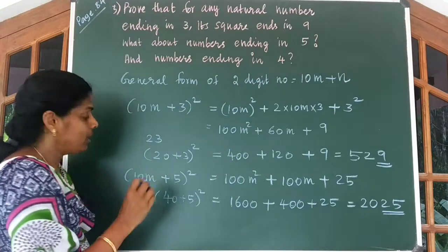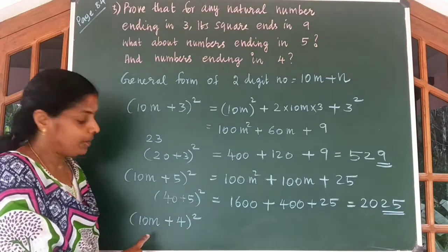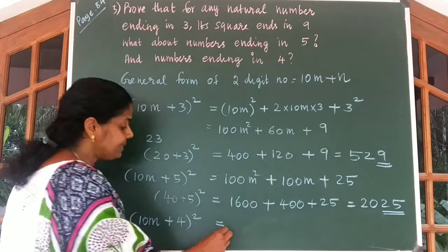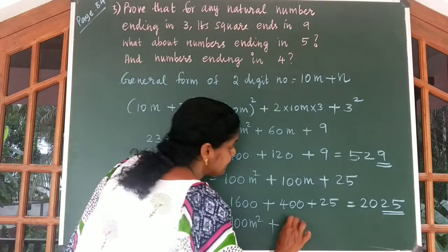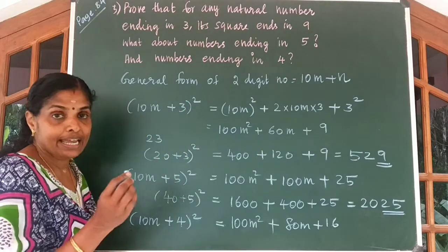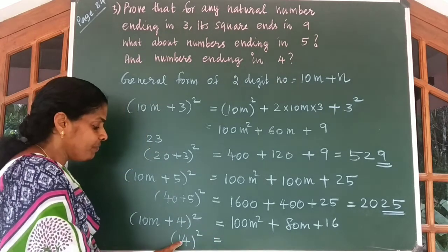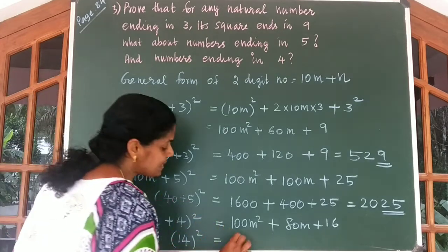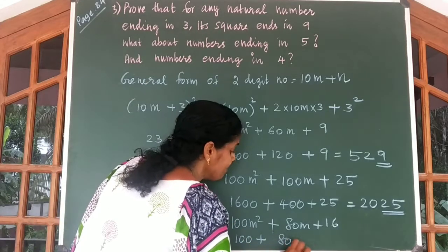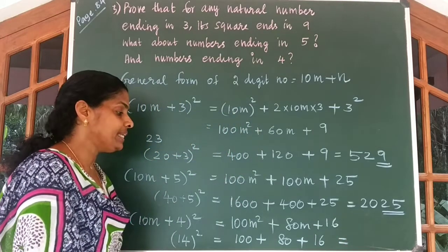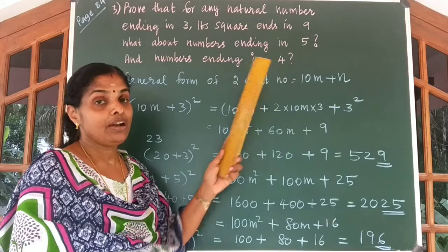The last one: numbers ending in 4. If a number ends in 4, the general form of a two-digit number ending in 4 is (10m plus 4) the whole square, giving 100m square plus 2 into 4 into 10m plus 4 square, which equals 100m square plus 80m plus 16. Let us consider 14 square: 10 square equals 100, plus 2 into 4 into 10 equals 80, plus 4 square equals 16, so 100 plus 80 plus 16 equals 196. So if a number ends in 4, its square always ends in 6.